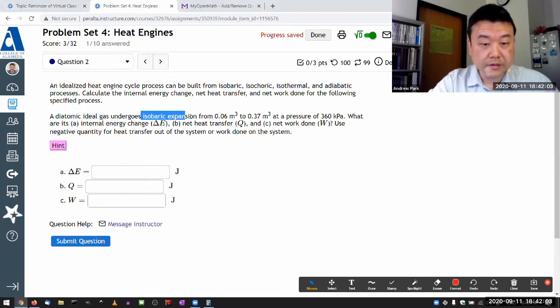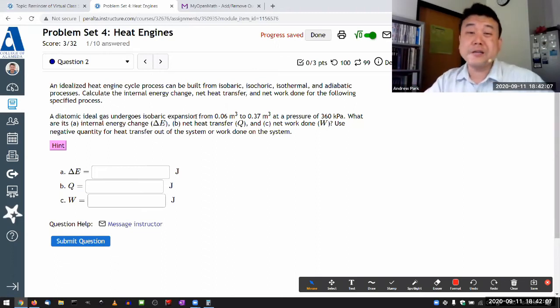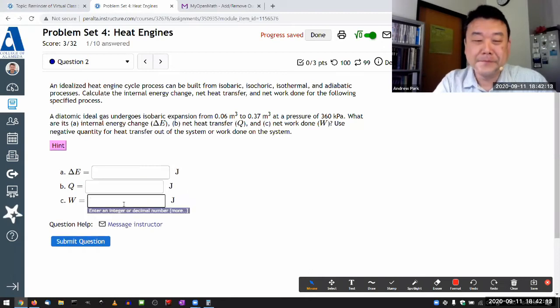So for isobaric expansion, in some sense, it's probably the most complicated one in the sense that none of these quantities are zero. In isobaric expansion, there is a heat transfer, there is work done, and there is non-zero change in internal energy. So you're just going to have to work it all out.